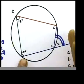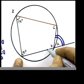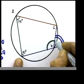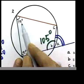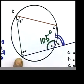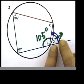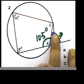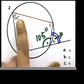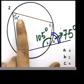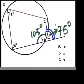What is the reason? Because it's a cyclic quadrilateral. So that's 75, so this should be 105 degrees. 105 and 75 add up to 180. Now what about this exterior angle? There is a shortcut: the exterior angle equals the interior opposite angle, so that angle should be 75 degrees.